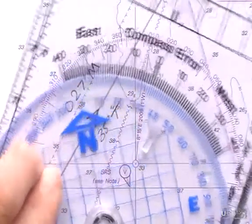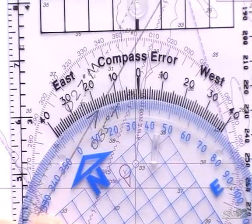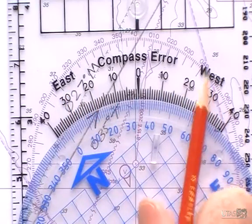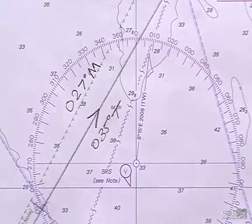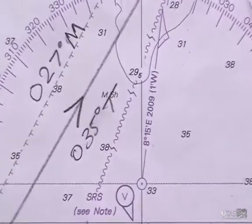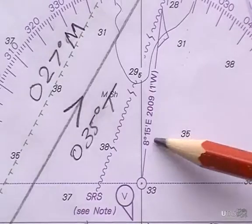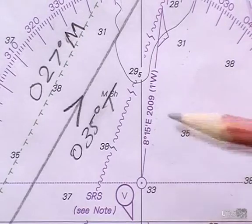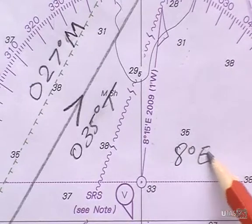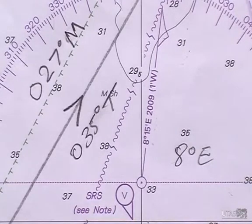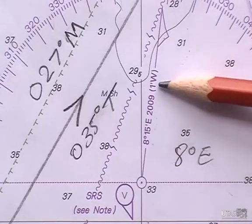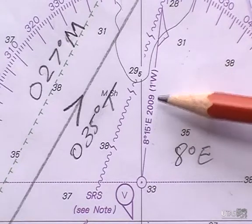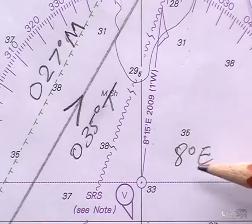The other thing you can use this for is to allow for compass error. You can see compass error if it's easterly or westerly. Here we've got the compass rose showing 8 degrees 15 minutes easterly variation, so we'll call that 8 degrees east variation. This also shows that it's moving one minute to the west every year, but that was accurate in 2009, and we'll round that to 8 degrees east.